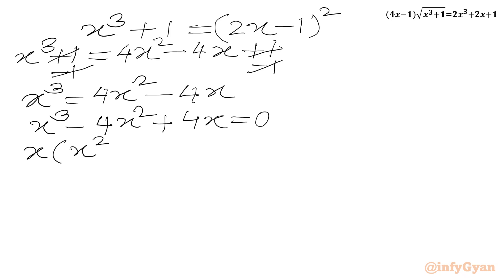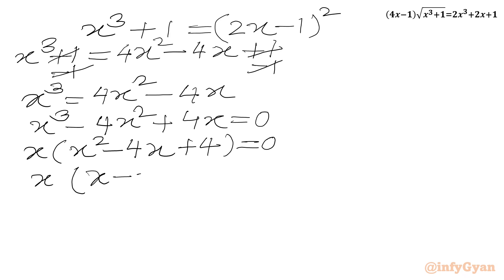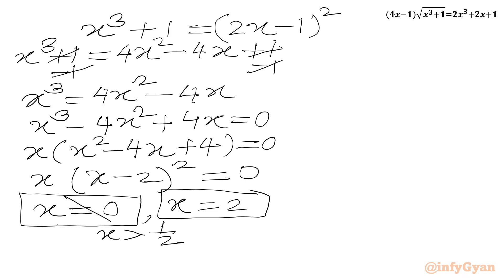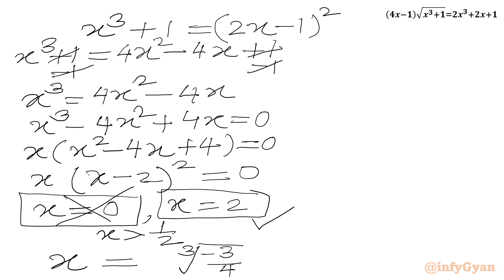In the bracket we get x² - 4x + 4 = 0, which is (x - 2)² = 0. Using the zero product rule, either x = 0 or x = 2. There was one condition that x must be greater than 1/2, so we cancel the x = 0 solution. Therefore x = 2 is the accepted solution from this equation. Our final answers are x = ∛(-3/4) and x = 2.